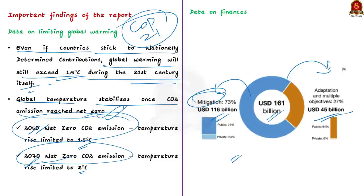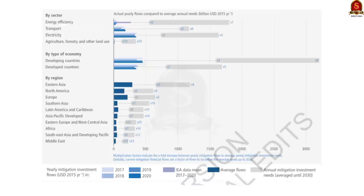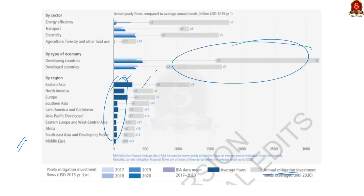You know the difference between mitigation and adaptation — post it in the comment section. From the figure, you can also see that 94% of the total funding came from public sources, so efforts must be made to ramp up private funding. Looking at funding required for mitigation by type of economy, the average mitigation-related fund flows are almost similar for both developed and developing countries, but the average mitigation investment needed is high for developing countries compared to developed countries. In essence, developing countries are facing a deficit in funding related to climate change mitigation efforts.